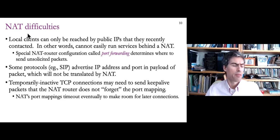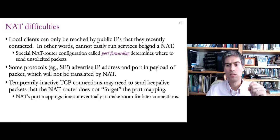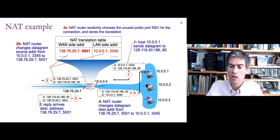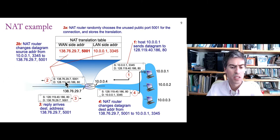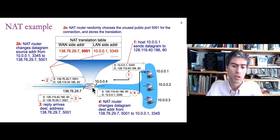There are some problems introduced by NAT. Local clients can only be reached by public IP addresses if they themselves recently contacted that public IP address — a mapping is created only when a packet from the inside is sent first. If internal machines are quiet and someone from outside wants to talk to one of them, the router has no way to know which machine is the intended recipient. A workaround is permanent port mappings: you can configure the router to permanently map a certain port, allowing a particular internal machine to receive unsolicited messages.